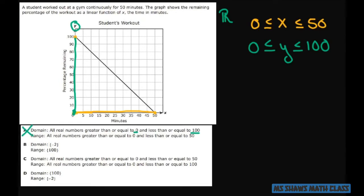The range is 100. That doesn't make sense. Let's look at this. The domain is greater than or equal to 0 and less than or equal to 50. And the range is all real numbers greater than or equal to 100.